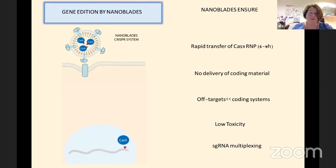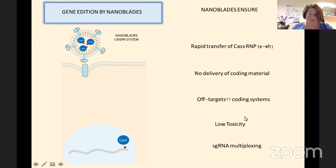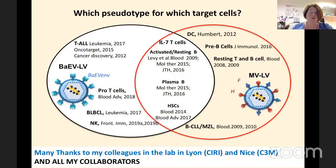To summarize the nanoblade system: it is very flexible with rapid, mild transfer of Cas9 and guides to cells. There is no encoding material inside the particles — only proteins and RNA — making it a hit-and-run system. Off-target effects are quite low, toxicity is low because it's like a simple lentiviral vector infection, and we can embark multiple guides simultaneously. This summary slide shows how much these pseudotypes have opened up to the research field and hopefully also to gene therapy.